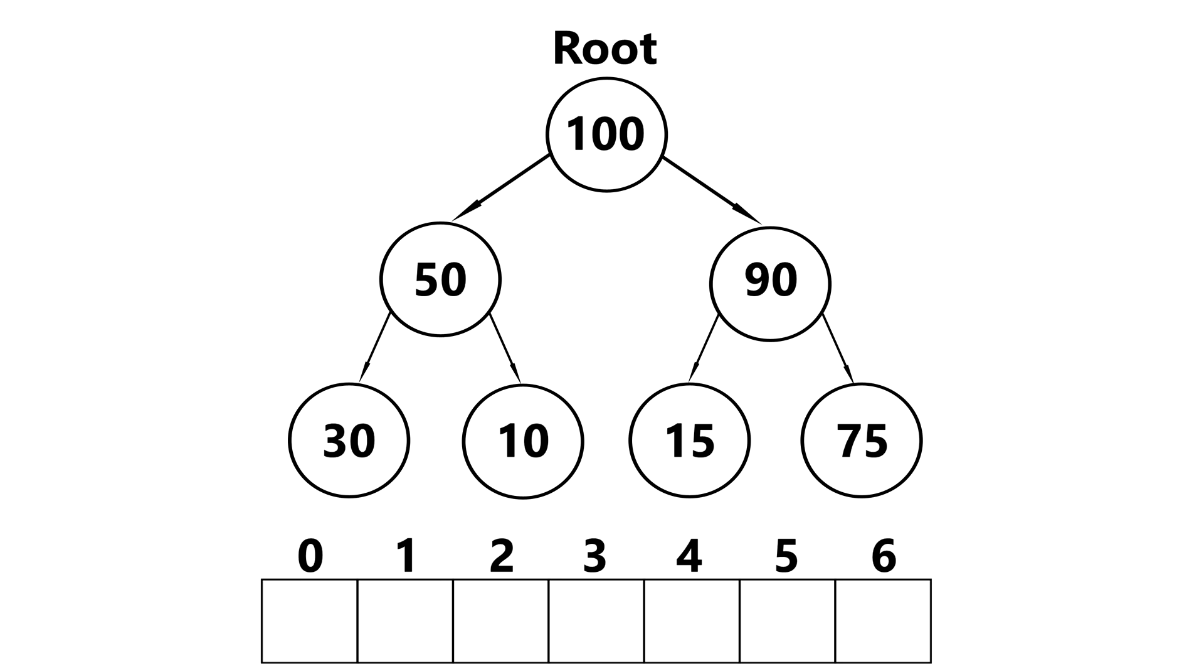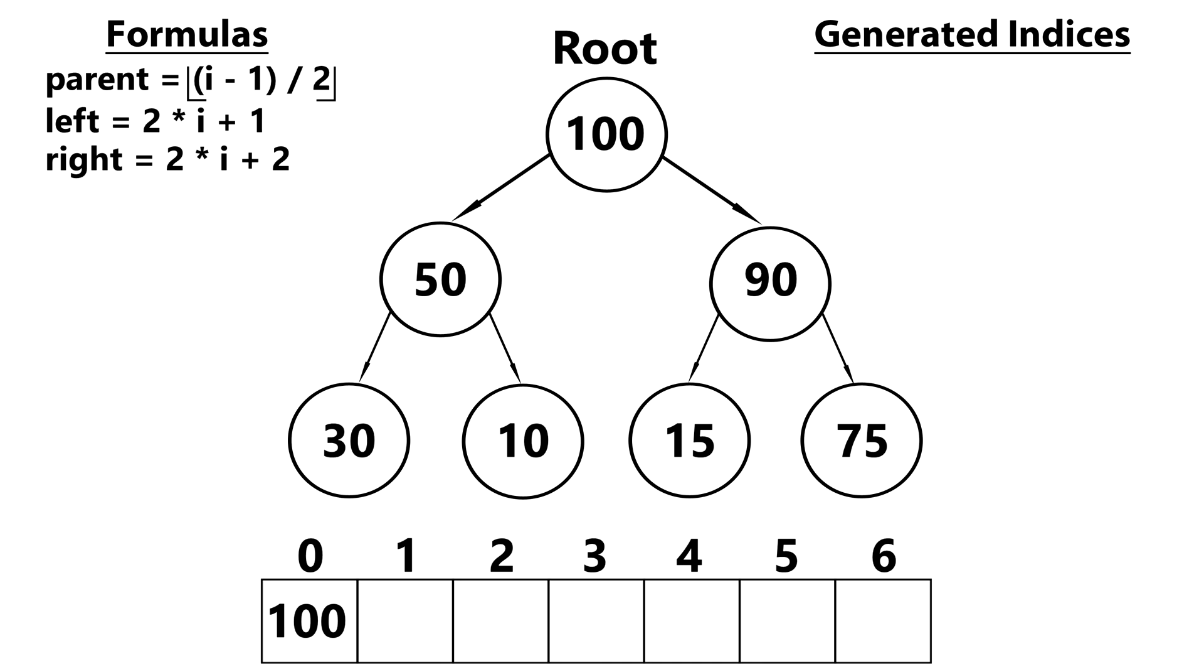So let's say that I was given the following tree. Let's translate this tree into its array representation. So our root is always going to start at index zero. So let's generate its children by using the formula. So our root is at index zero. So we use that for i and we get the following.